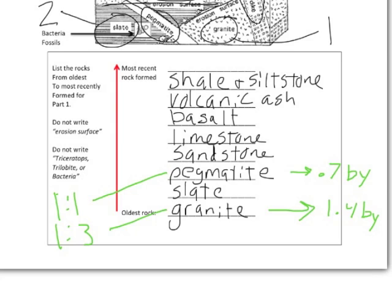Let's say I just give you the ages of two other rocks, that the volcanic ash is 70 million years old, which is only 0.07 billion years old, but the volcanic ash is 70 million.